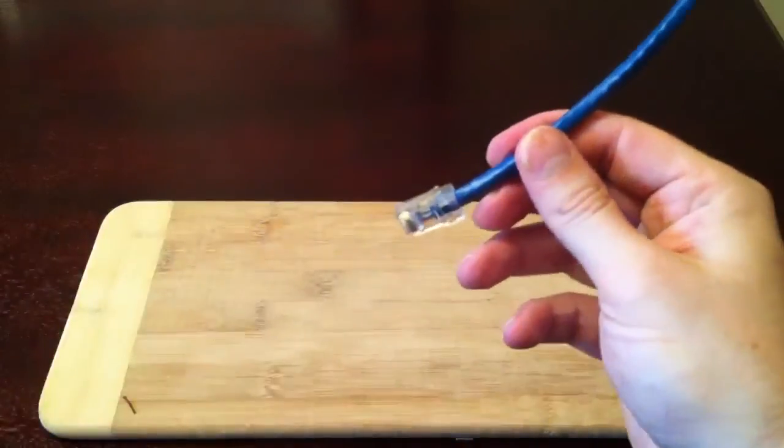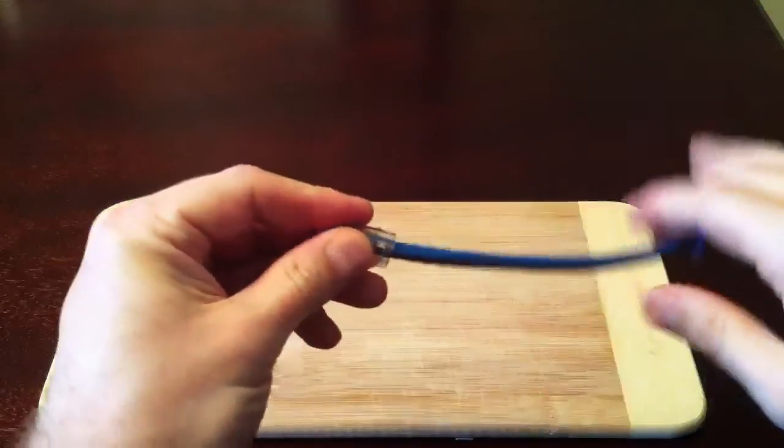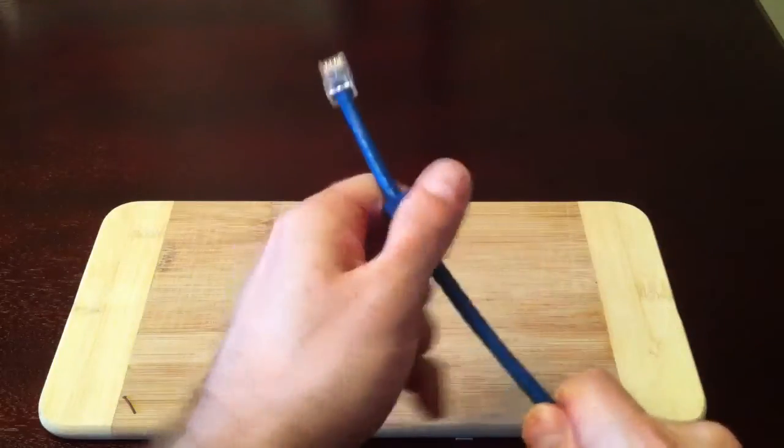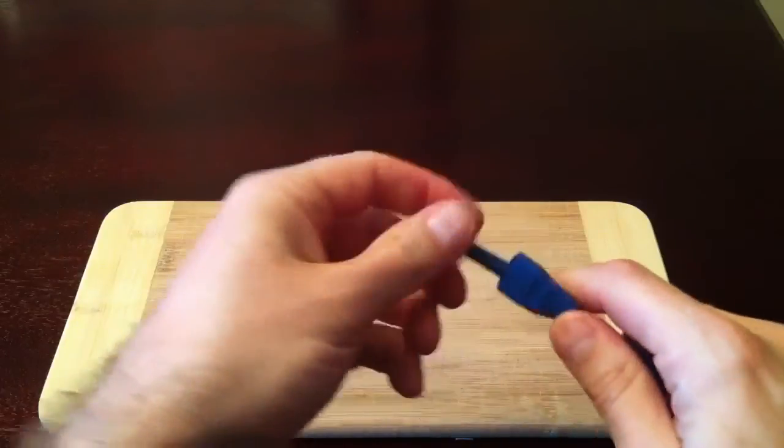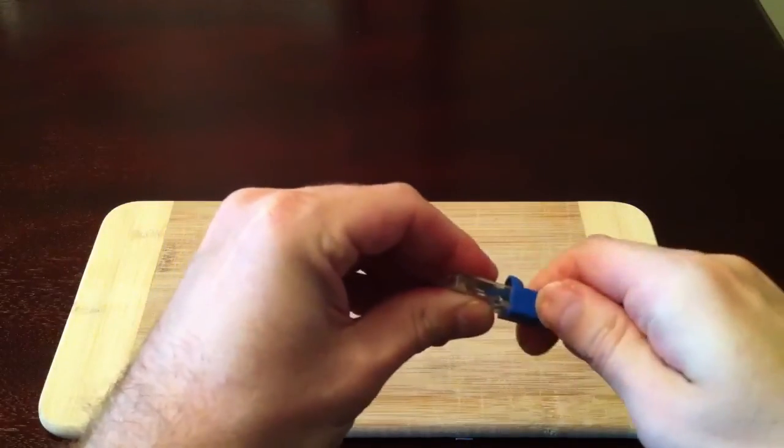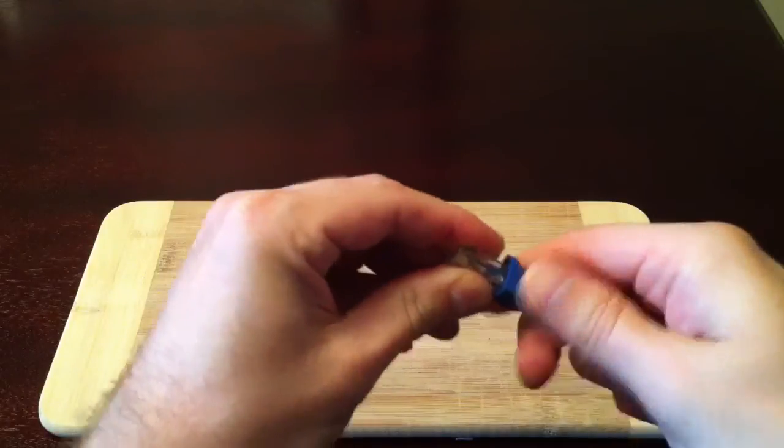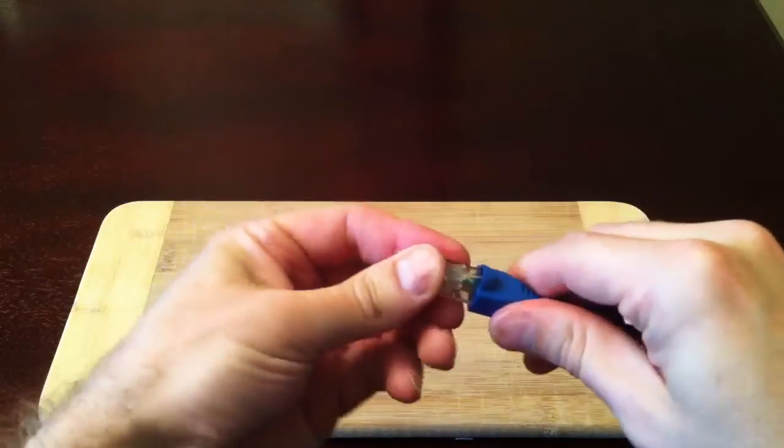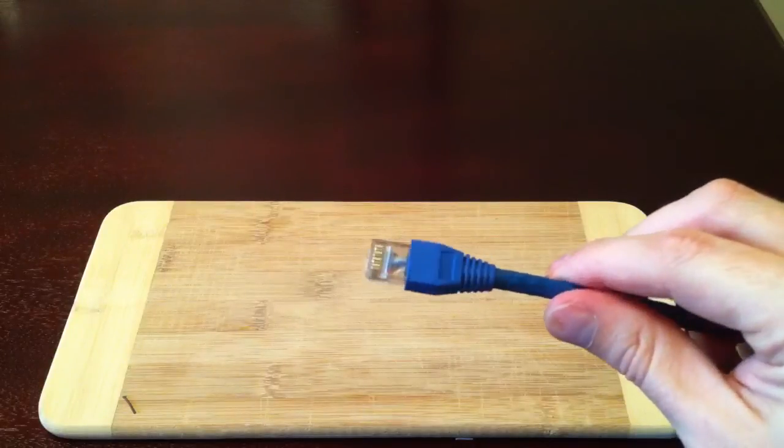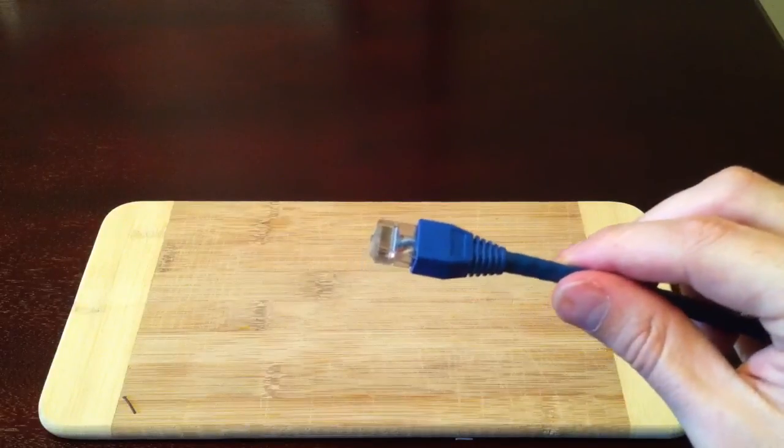Now that this is complete, you can pull the cable out and grab your strain relief boot that you put on earlier and slide it onto the plug. After sliding the strain relief boot into place, follow all the previous steps to complete the other side of the cable. Once finished, you'll have a professional looking and fully functional CAT6 cable.